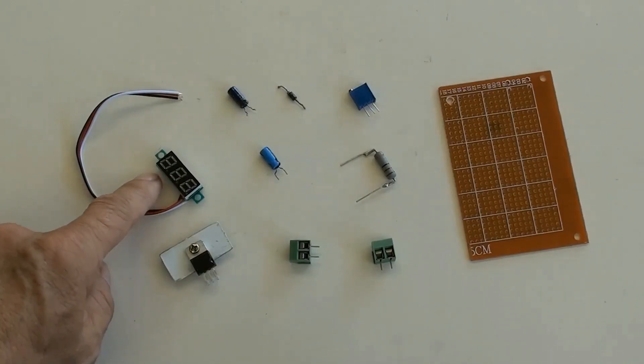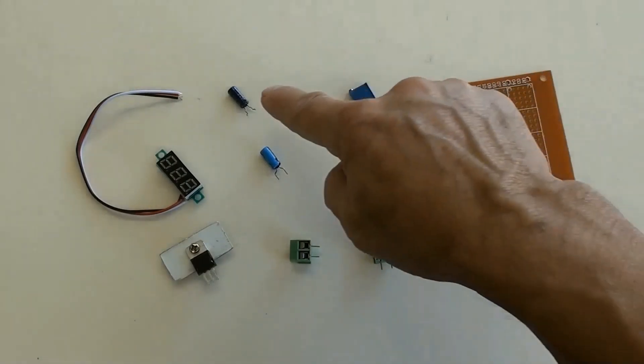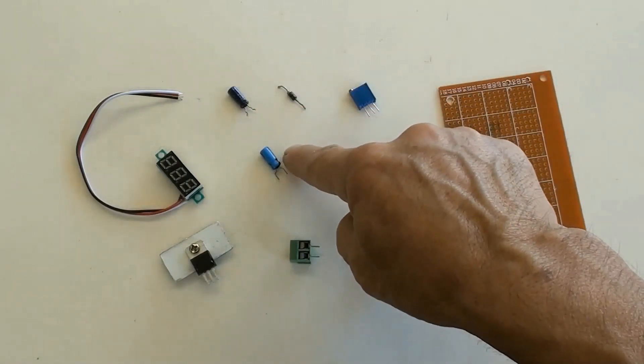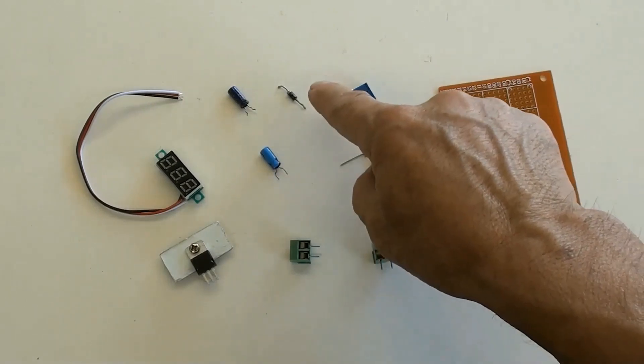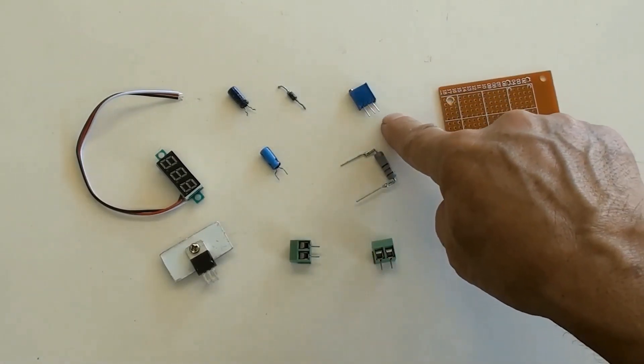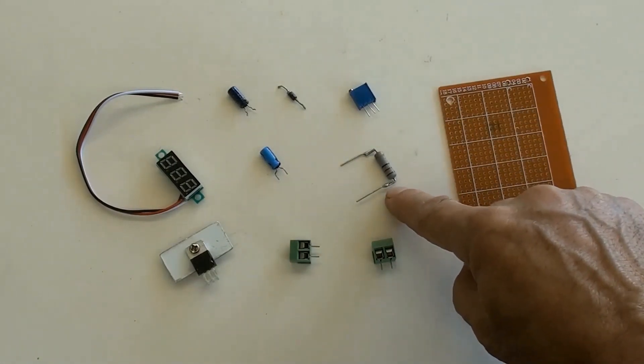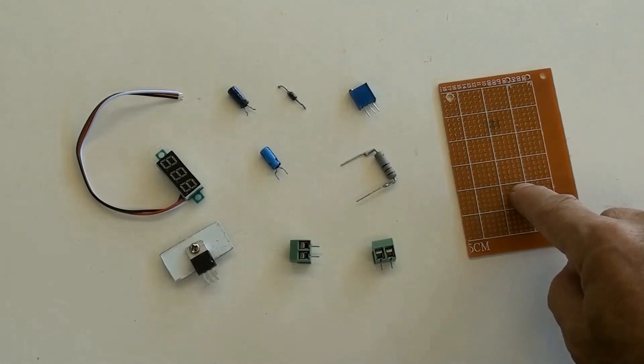This is a mini digital voltage meter, that is an LM317 with heatsink attached, these are PCB terminal connectors. Those are capacitors, 2 microfarad, a diode type 1N4007, a 200 ohm potentiometer, a 22 ohm 2 watt resistor, and a mini PCB board. All these parts will be soldered on this board.